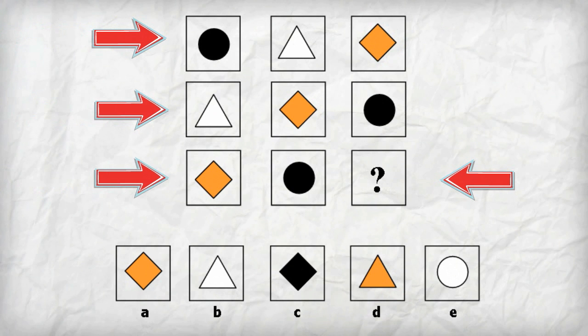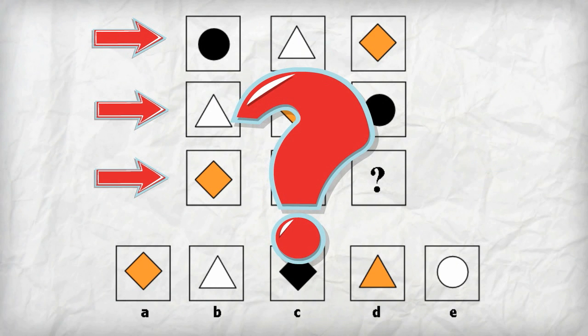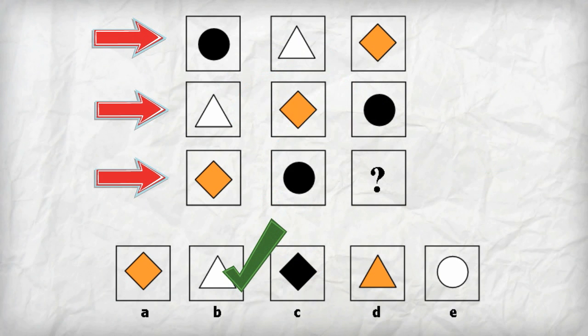In this example, the circle, triangle, and diamond shapes move across the rows and down the columns. Do you know which answer goes in the box with the question mark? It's the white triangle, answer choice B.